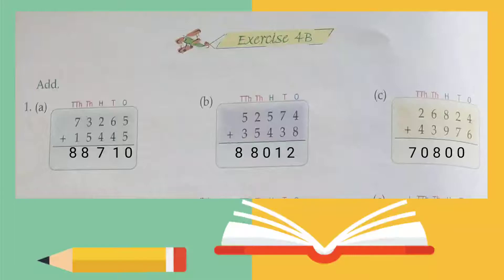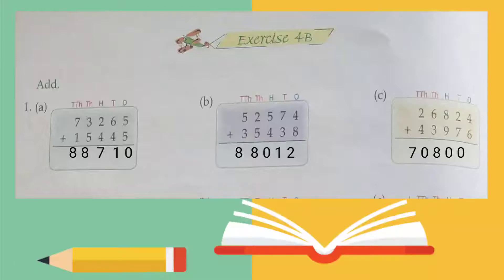Moving on to part B: the digits are 52,574. We have to add 35,443 and 8. We start adding from the right-hand side. Four plus eight is twelve — one will be carried over. Seven plus three is ten, plus one is eleven — one carry over.